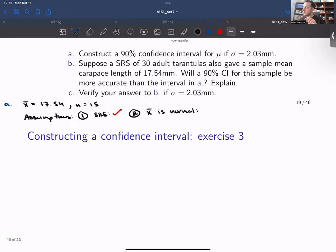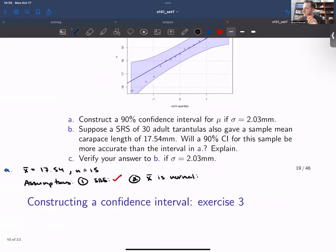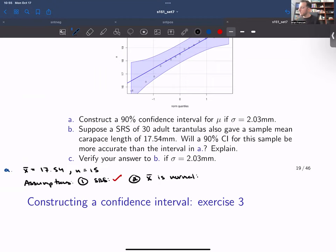and we're not given a large enough sample size that we can use the central limit theorem, but we are provided with a normal probability plot.